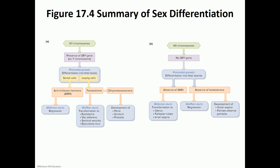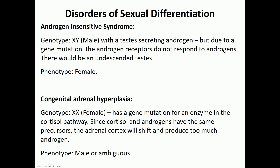A useful way to think about it is that by default all fetuses would develop female parts unless there is a Y chromosome with the SRY gene. Without the hormones, the Müllerian duct develops. In the presence of the hormones, the Müllerian duct regresses — you have to actively turn off female differentiation — and the hormones stimulate development of male reproductive organs through differentiation of the Wolffian ducts.